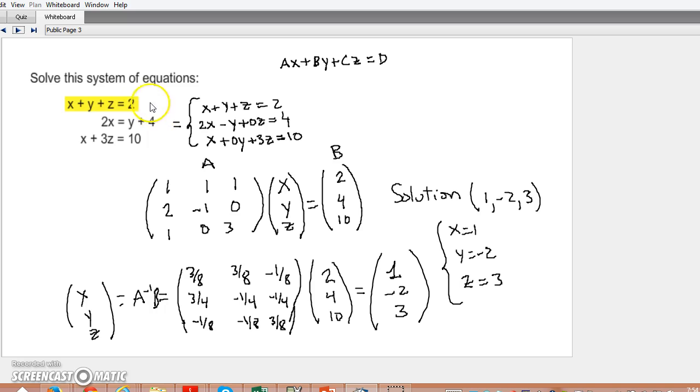The first thing I have to do is reorder this system of equations in this way: Ax plus By plus Cz equals D. So the first one becomes this line here, the second one becomes this equation, and the third line becomes this.